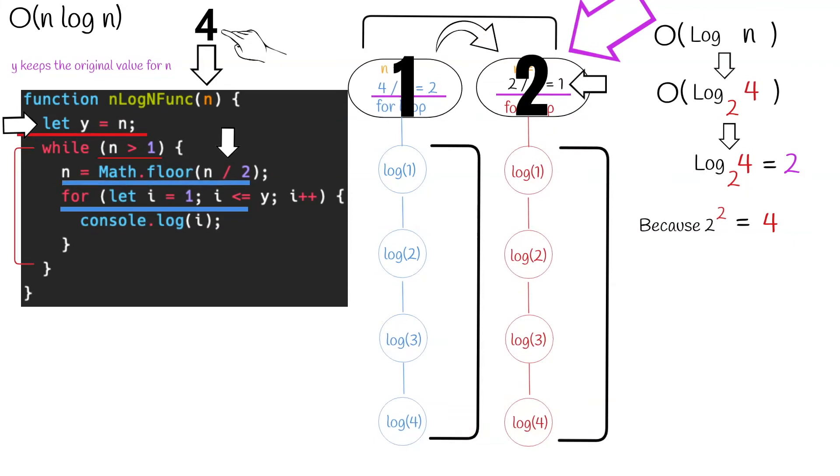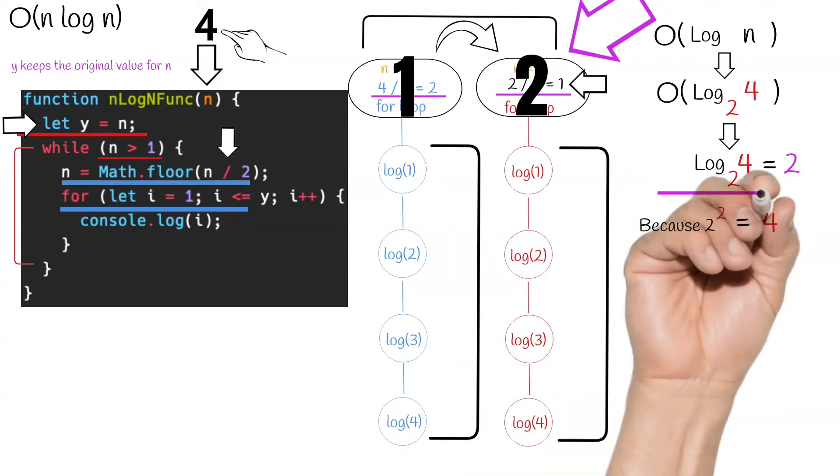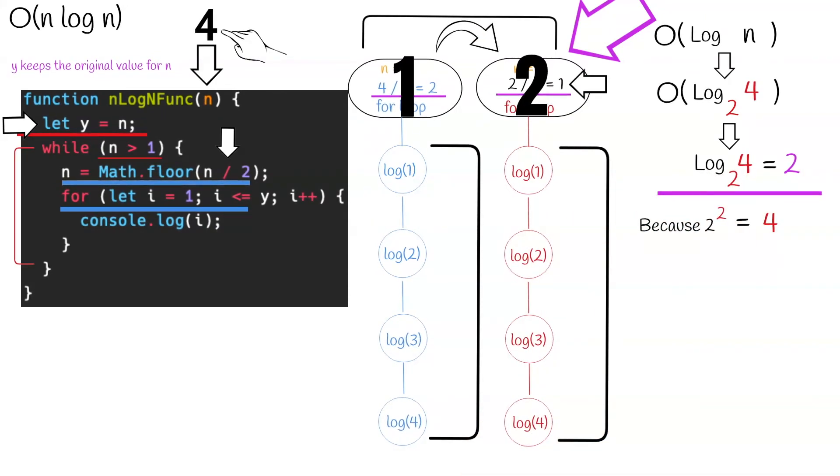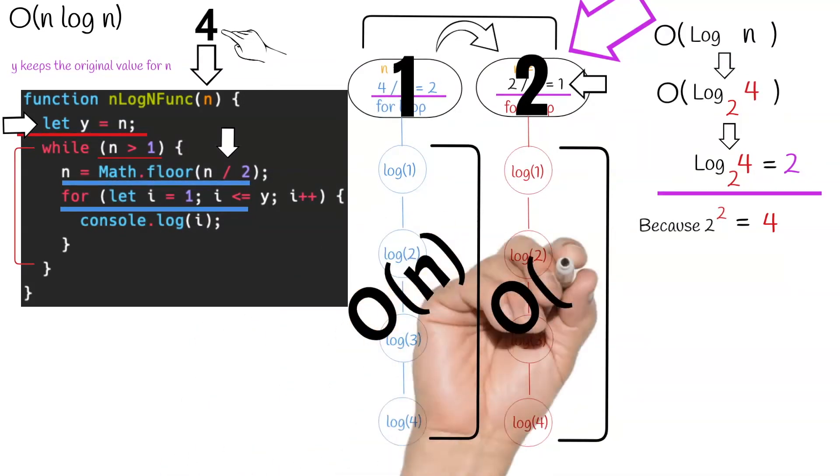So for this top level loop, we have log base two of four equals two. Now we need to take a look at what is happening in each of the two iterations of the top level loop. For each iteration, we loop through the full size of y, which is the original size of n. So that means that each of these inner loops has a complexity of O of n, which just means that processing time increases linearly with the size of n.